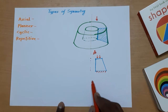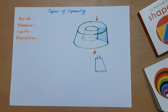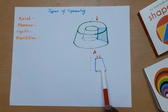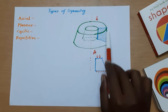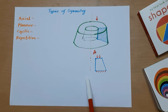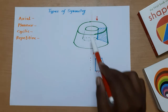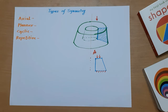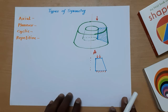We can rotate the results by whatever angle we need — 360 degrees, 180 degrees, 90 degrees, or any angle. When we rotate 360 degrees, only the result is rotating, not the model, so we get the result of the whole 3D part. The condition is that the object should be symmetric about the axis. This is called axial symmetry.